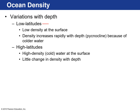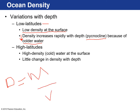At low latitudes, we see very low density seawater at the surface, but as you move into deeper waters the density increases rapidly — we refer to this area as the pycnocline. The reason for the density increase is because the water gets colder. Density equals mass over volume, so when temperature decreases, things contract, volume goes down, and the fraction becomes larger — density increases.